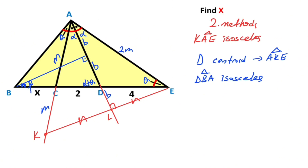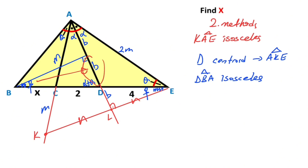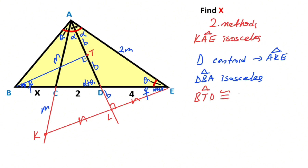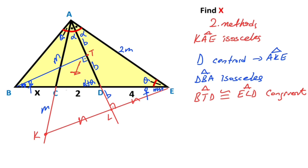After that, let's call this angle beta. That means this angle must also be equal to beta. So if you focus on these two triangles, they have the same angles, and the opposite sides of angle beta have the same length. Let's call this point T. That means triangle BTD and triangle ELD are congruent. Therefore, if there are four units opposite the 90 degrees, the opposite side of the 90 degrees must also be equal to four units. So X is going to be two units.